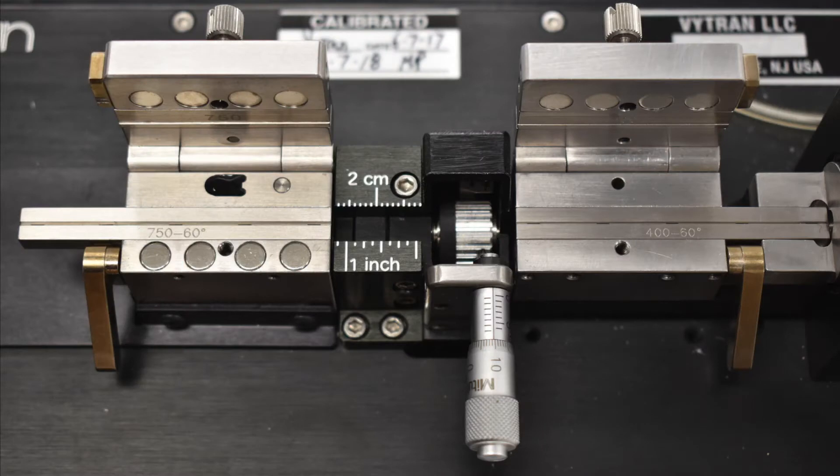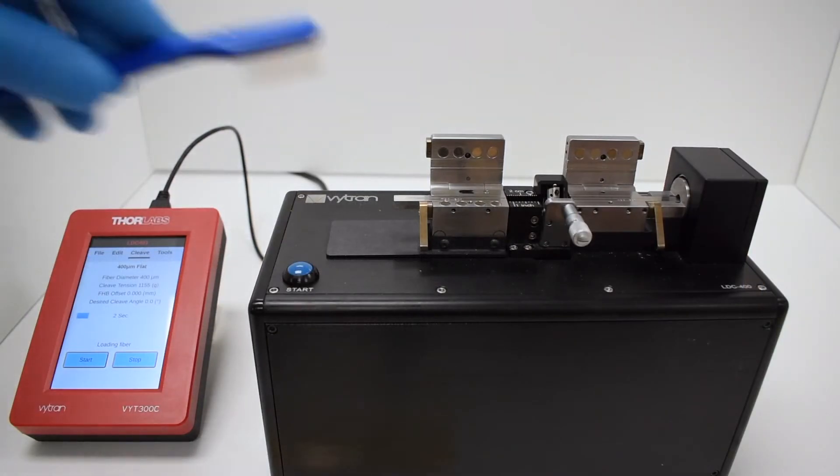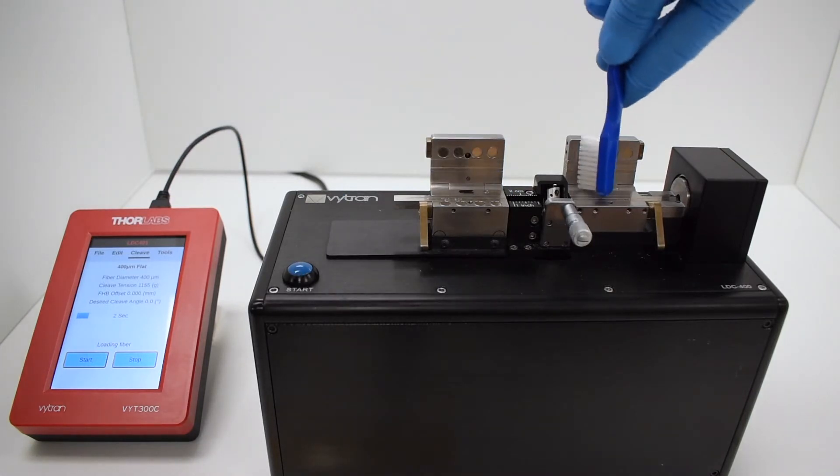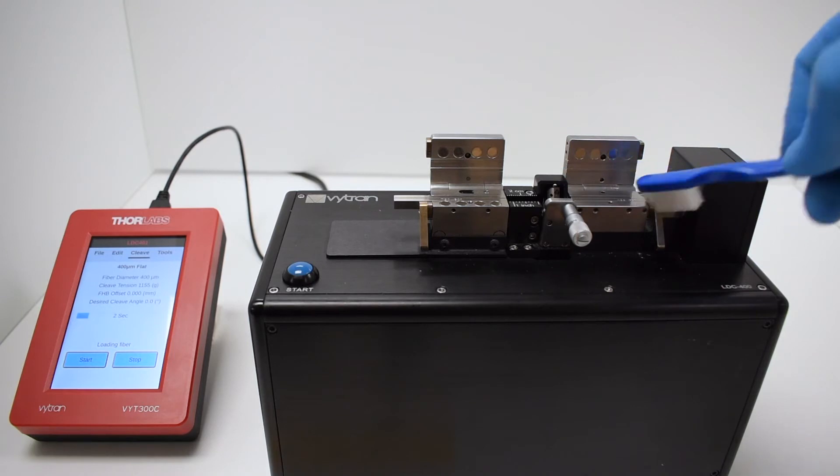Inspect to assure that the fiber holding blocks and inserts are clean and free of debris. If not, use a cotton-tipped applicator or included nylon brush with a solvent such as acetone or IPA to brush the area clean. Brush away from the cleave blade.